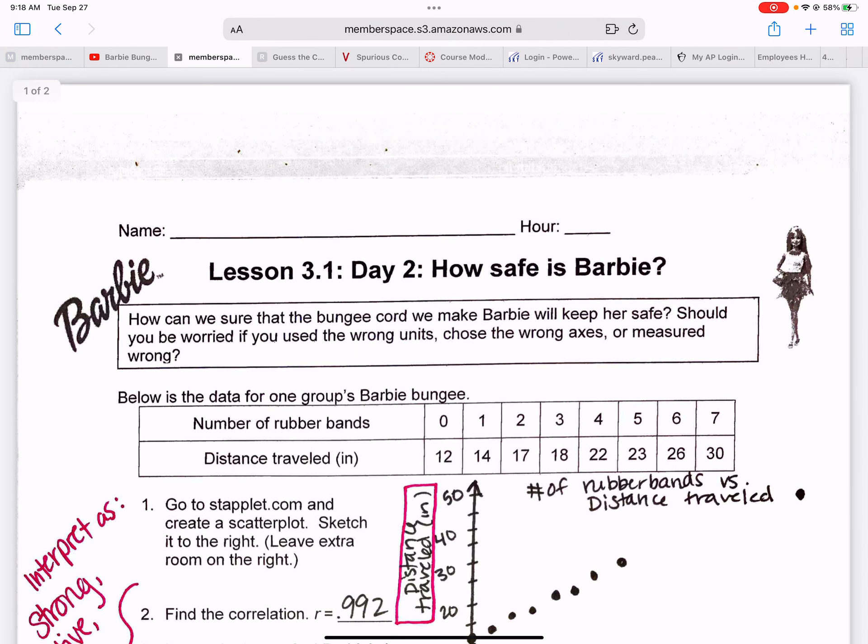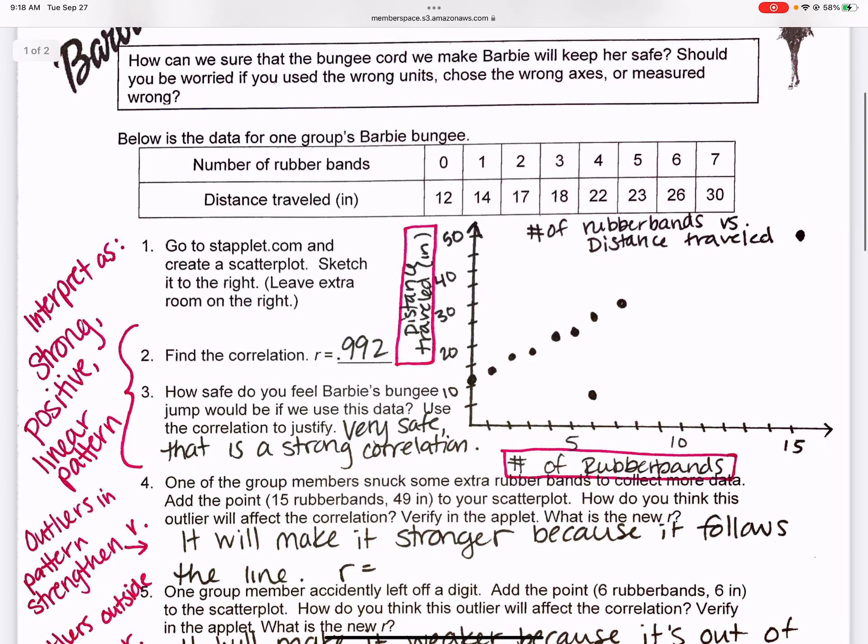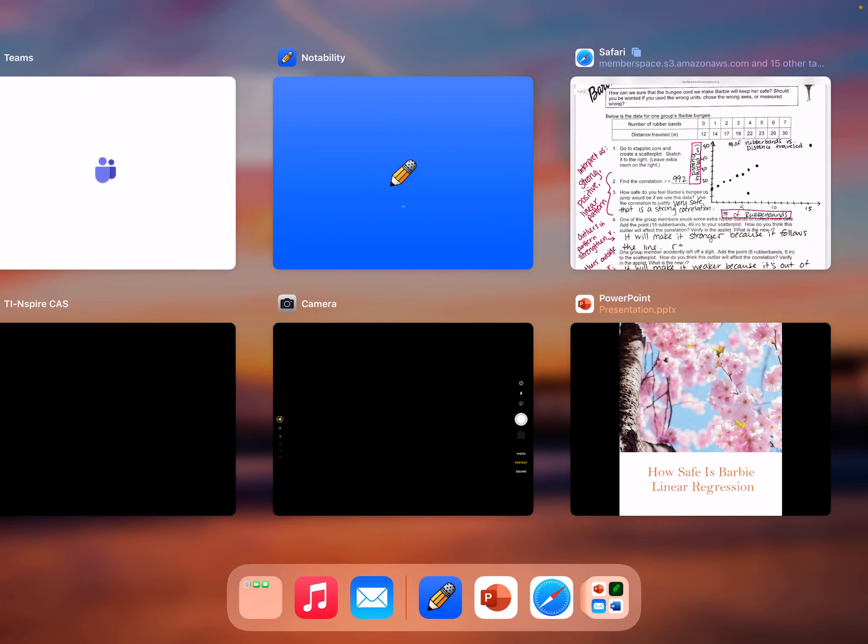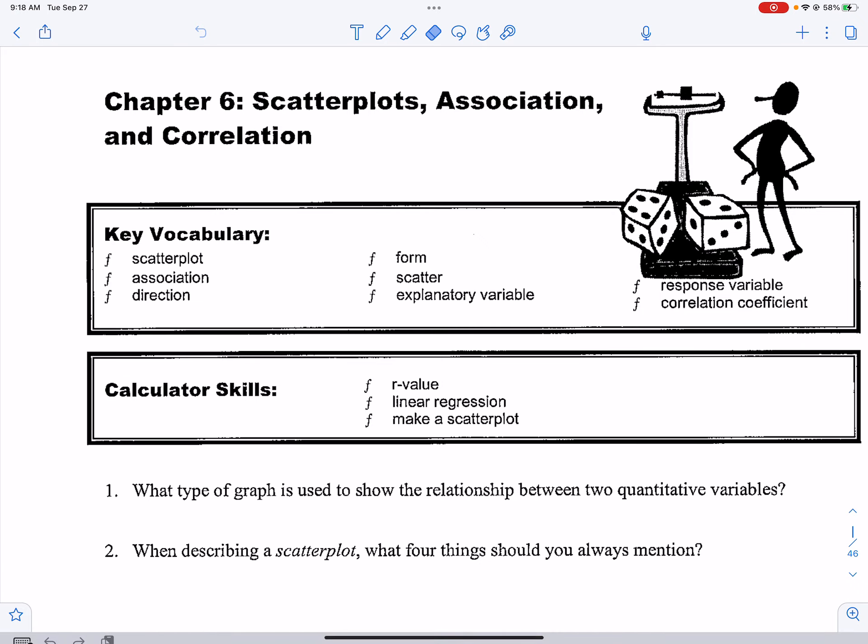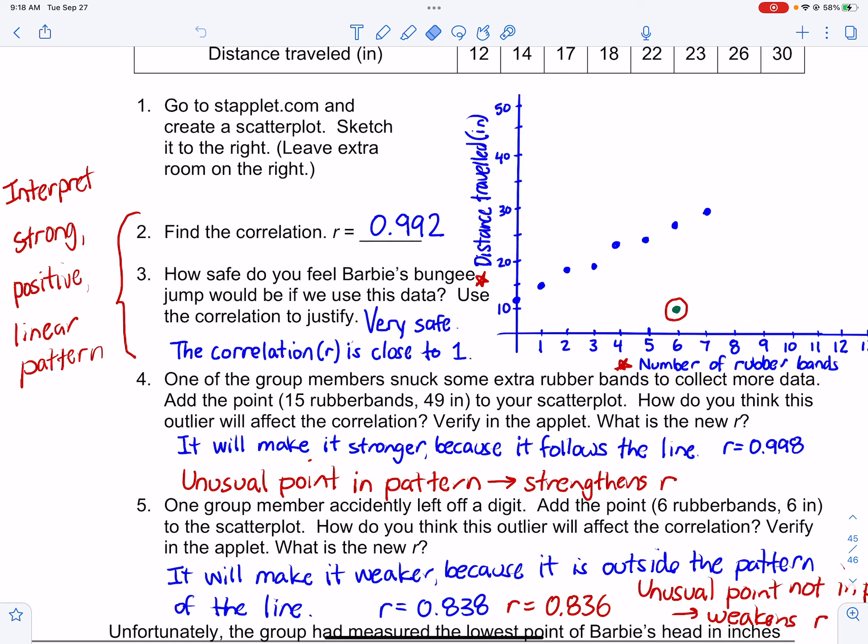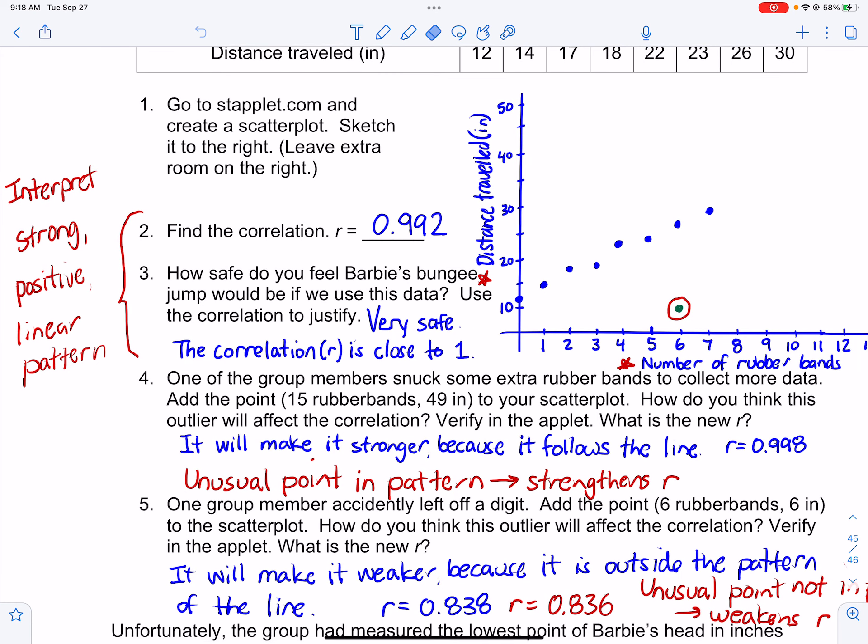So for today's lesson, we're going to see how safe is Barbie. So you should go ahead and complete the first page. And this here is going to be your results. And you can see here on how safe is Barbie. You can find the correlation. The way you find the correlation, as I showed you on my worksheet, is I gave you the instructions to go to menu 4-1-2, which is two variable statistics. So go ahead and look at my worksheet. It's not on this worksheet, but when you look at mine, it gives you the instructions of how to do so. So the correlation for this is 0.992.